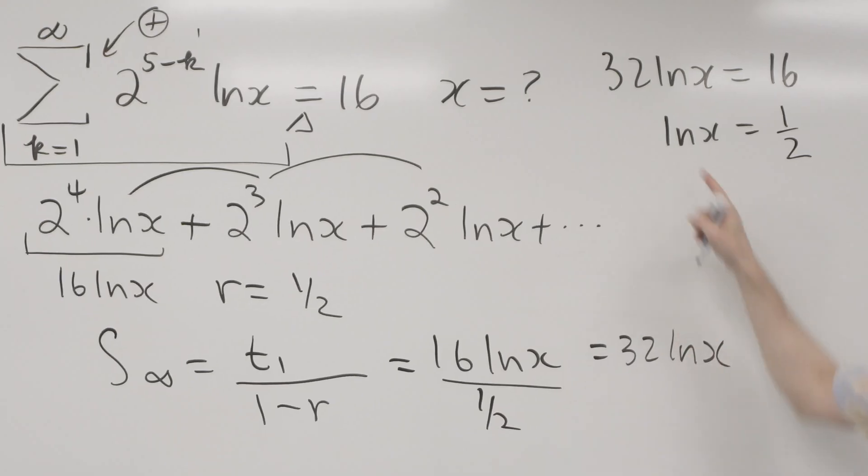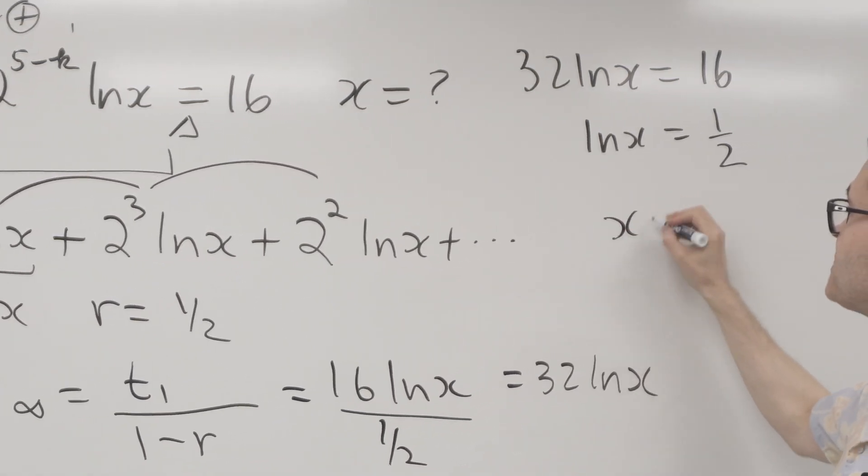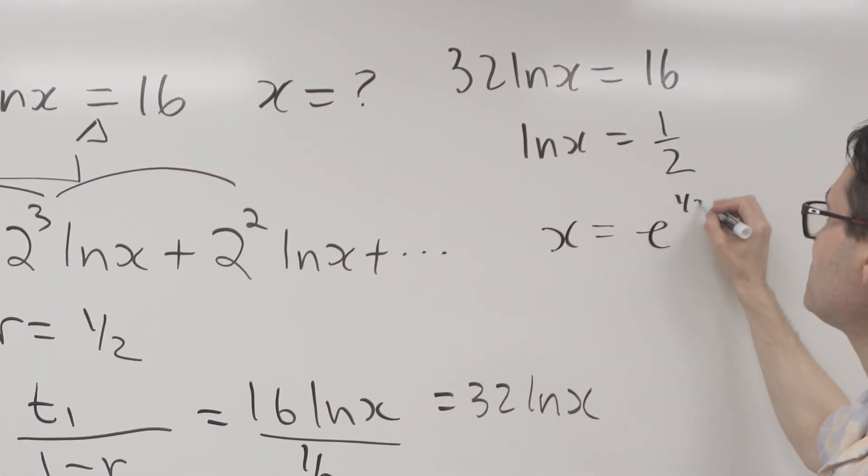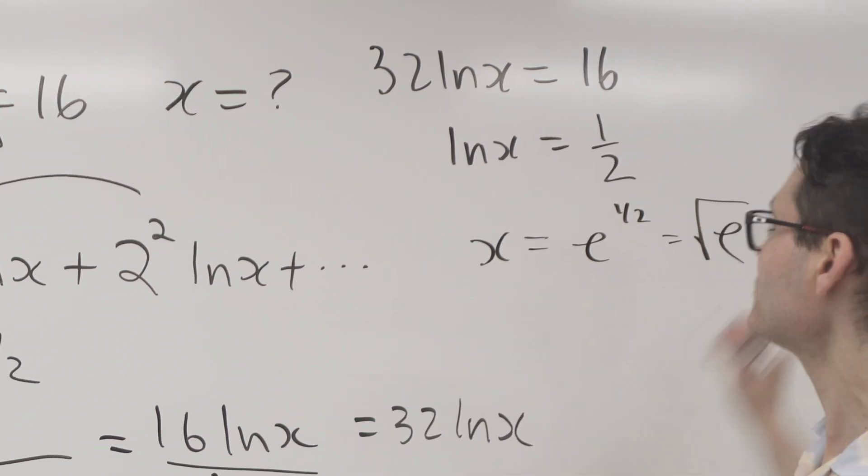and then I can just take it from log form to exponential form. So x is going to be equal to e to the one-half, or the square root of e.